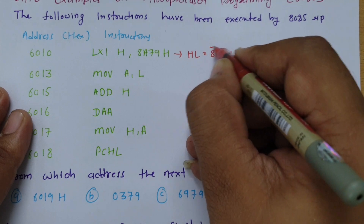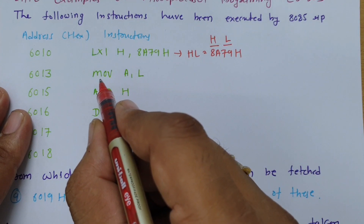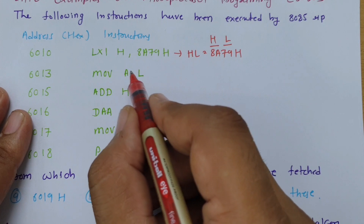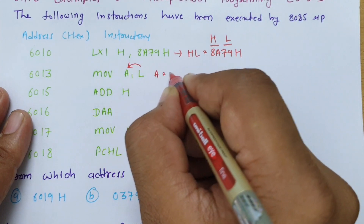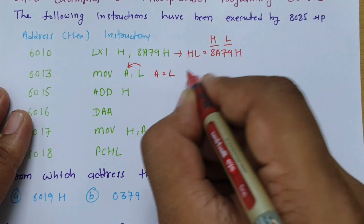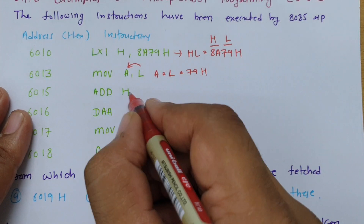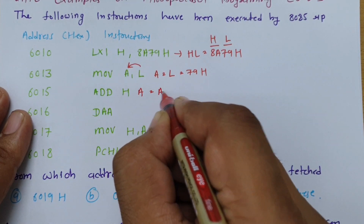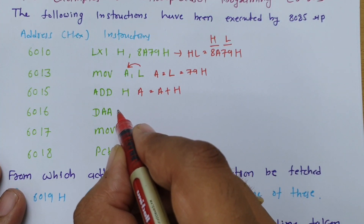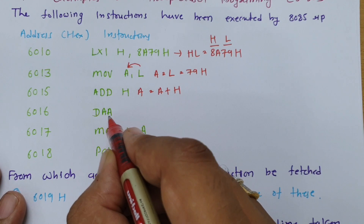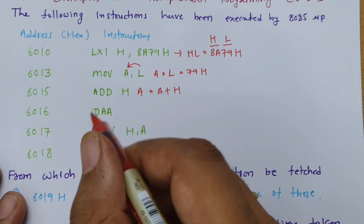So H is 8A and L is 79. Now with the MOV operation, L gets transferred into A, so the accumulator becomes 79. Then there is an addition: ADD H means the new A equals previous A plus H.